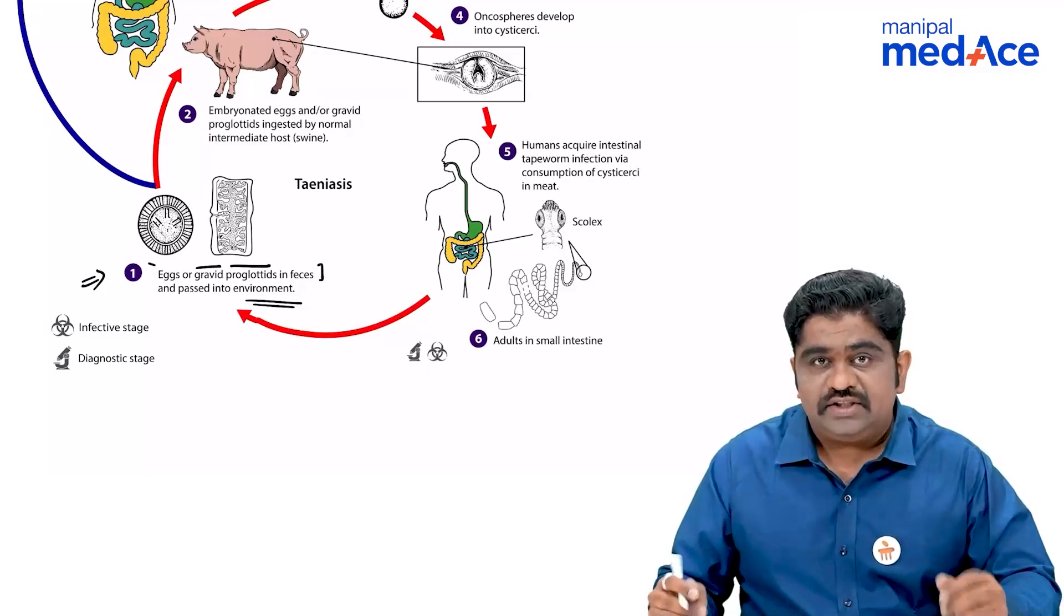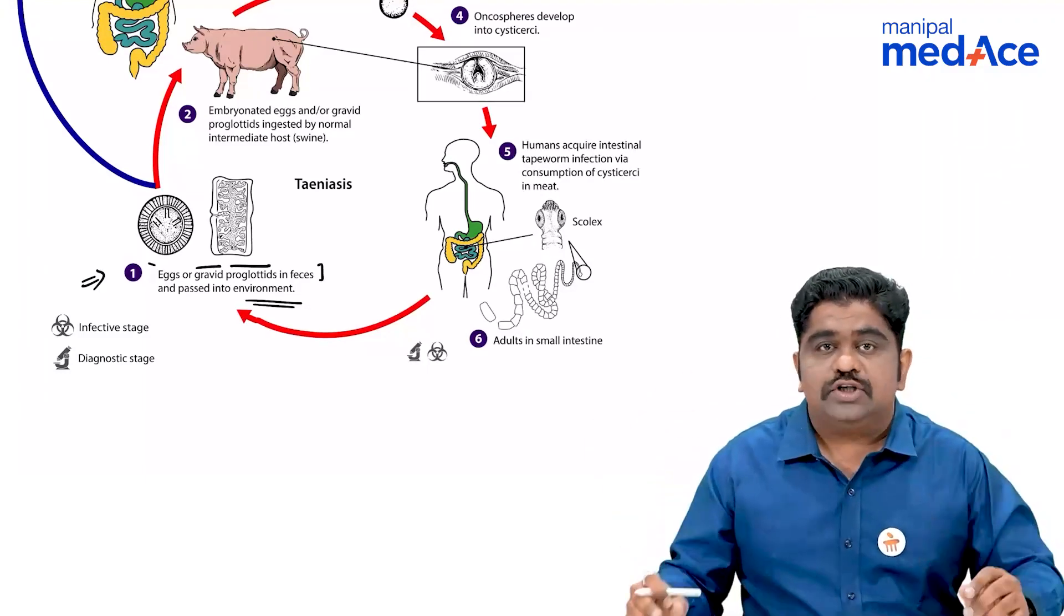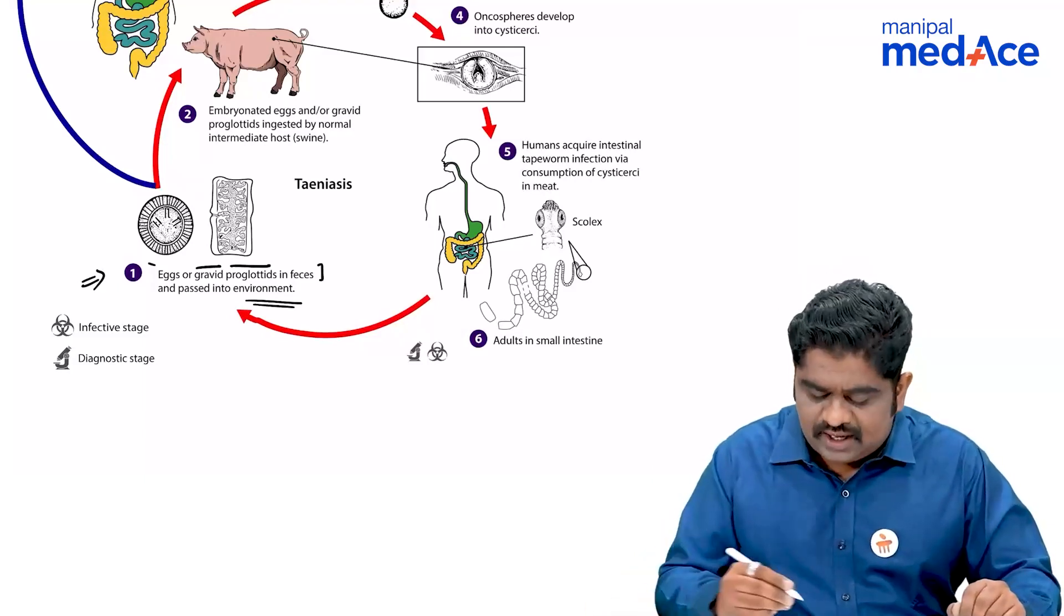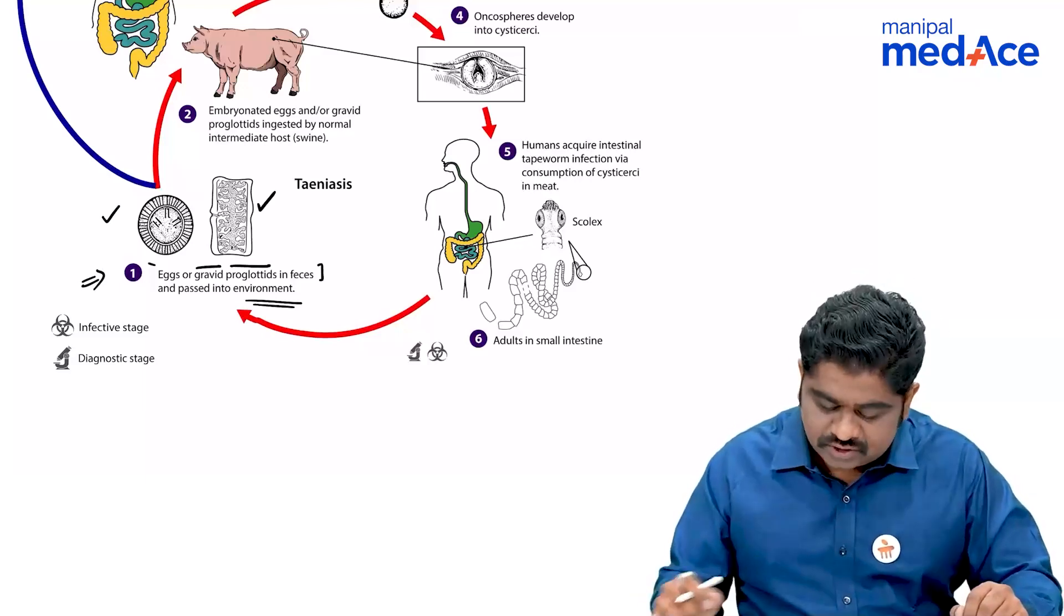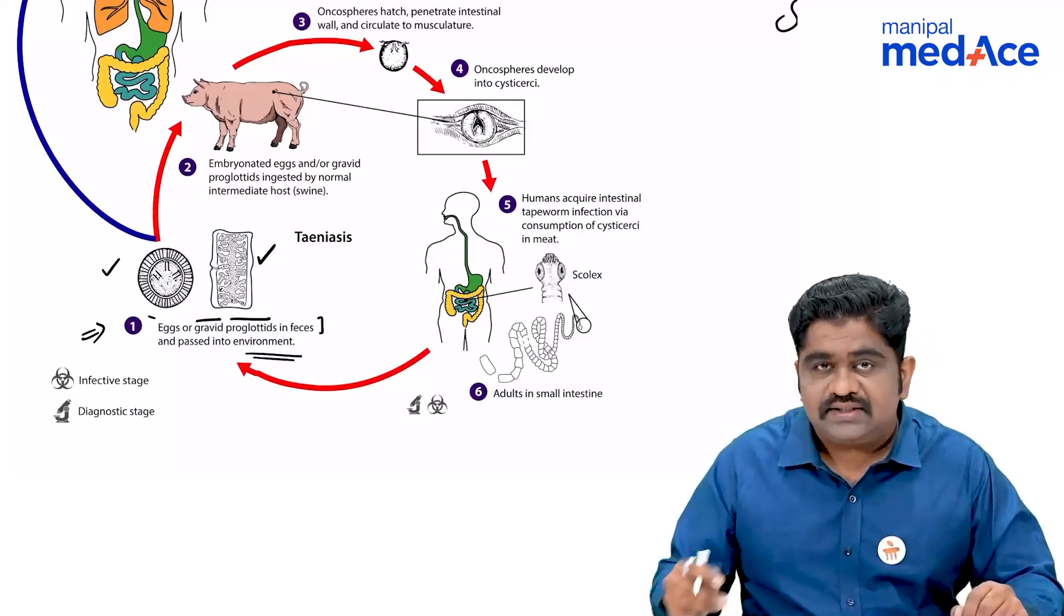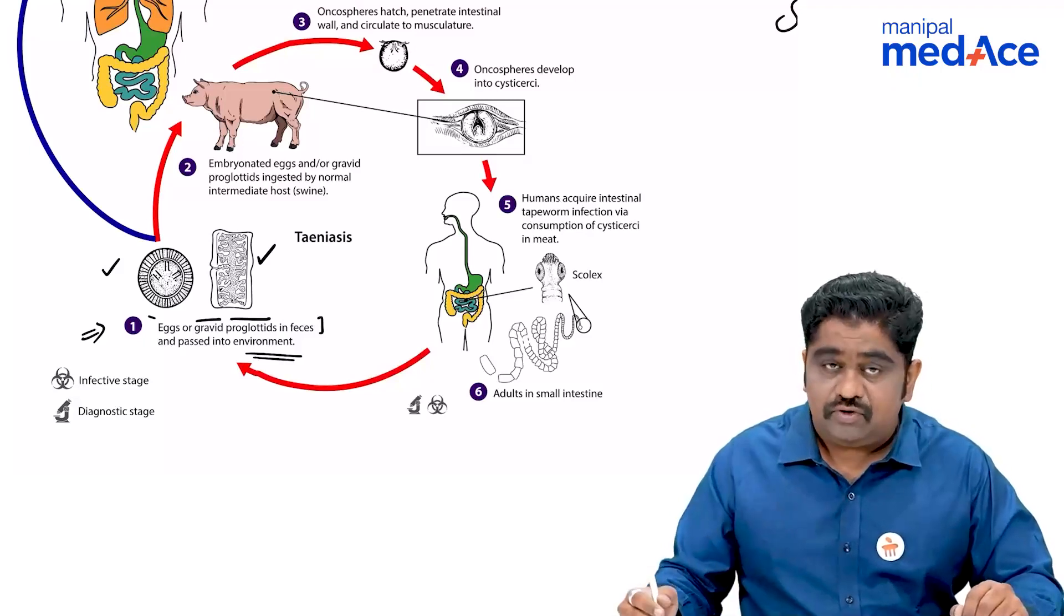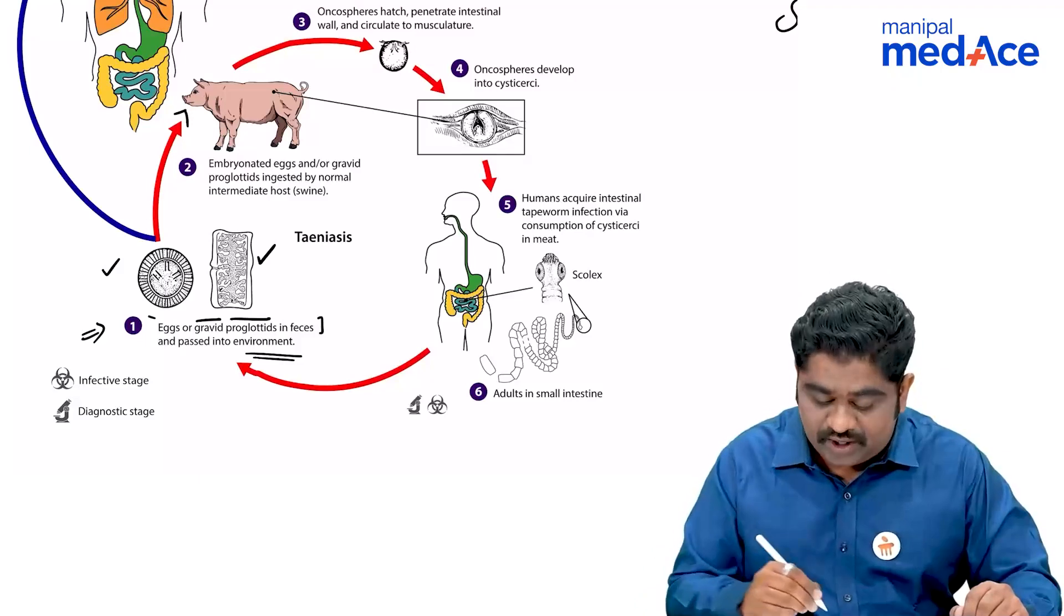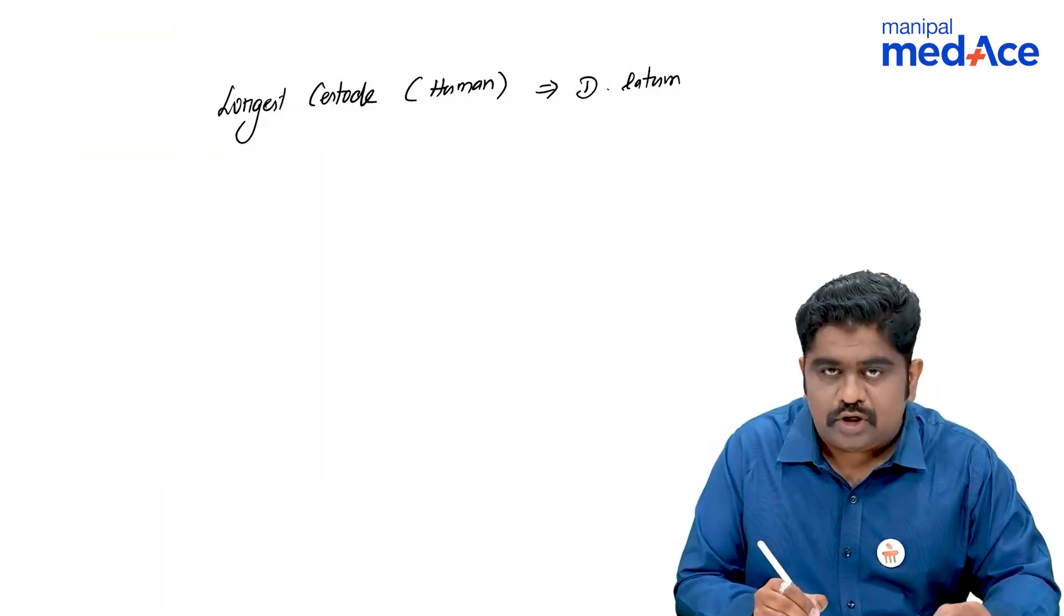In the feces, you will be having the gravid proglottids. Gravid proglottids means the ones which are farther away from the scolex will be as big as possible and as gravid as possible, very pregnant. So, they will be releasing the eggs. Either the proglottid or the eggs can be found in the soil. From there, if a pig is trying to graze the grass in that local area or is trying to eat something from the floor area, you will be able to have this particular pig acquiring these eggs or proglottids.